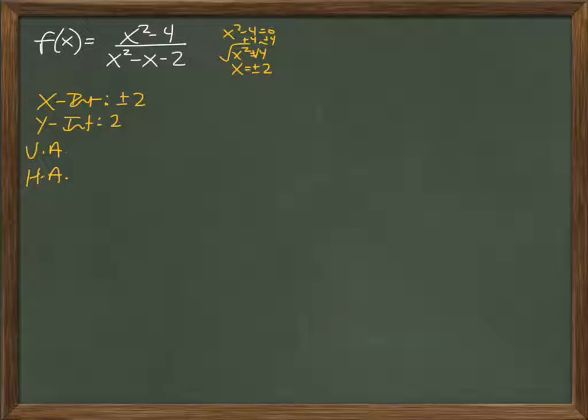Vertical asymptotes will exist where the denominator equals 0, so I'm going to set the denominator equal to 0 this time, so x squared minus x minus 2 equals 0. It's quadratic, so we usually like to do the x-factor chart.